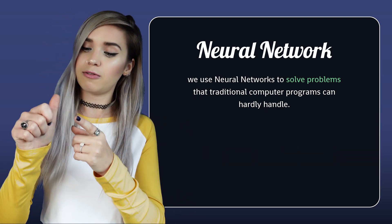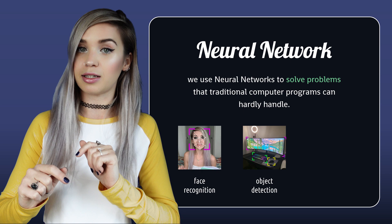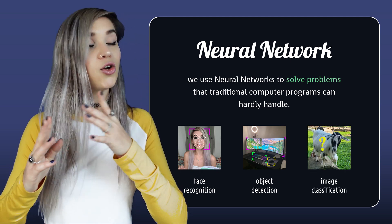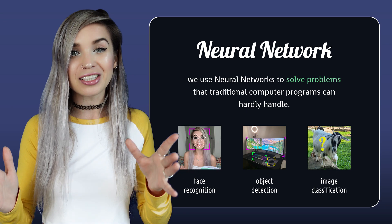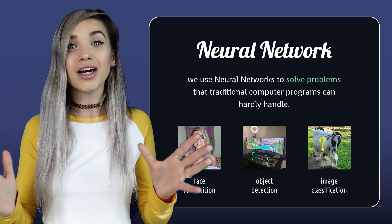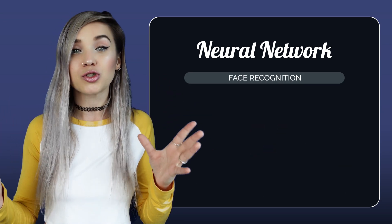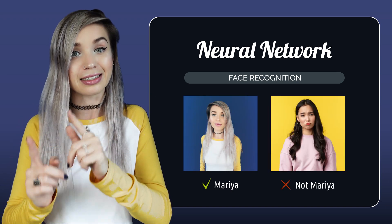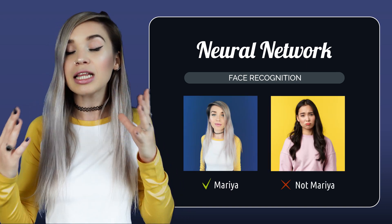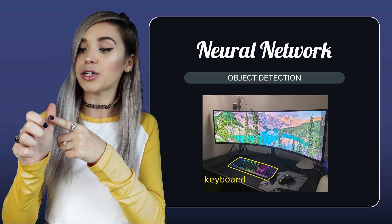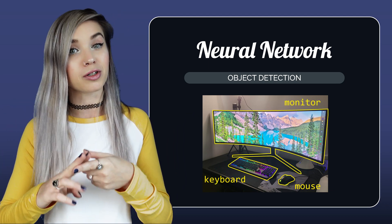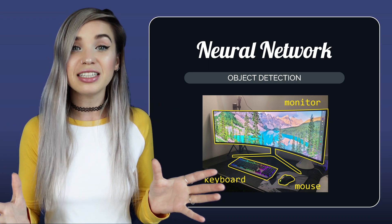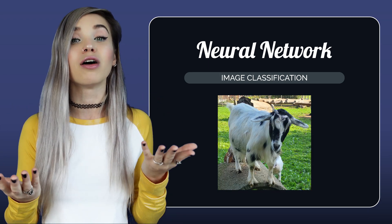For example, face recognition, object detection, and image classification. In all three cases, humans are really good at it. We don't really need to think much to know that this is Maria and this is not Maria. We can also clearly see that there's a keyboard, a mouse, and a monitor on this desk, and we can also say with confidence that this is a photo of a goat.